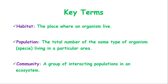Population is also important. It is the total number of the same type of organism — and when we say the same type, we're talking about species, it must be the same species — living in a particular area. For example, the population of dogs, the population of human beings, the population of rats, the population of cats, or the population of a certain type of bird. It refers to that specific species.